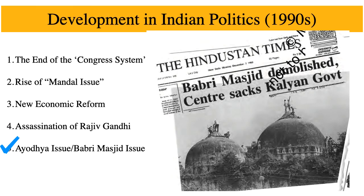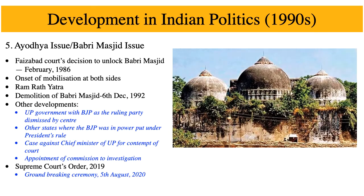Finally, we have the Ayodhya or Babri Masjid issue. The Babri Masjid at Ayodhya was a 16th-century mosque. However, some Hindus believed it was built after demolishing a temple of Lord Ram, believed to be his birthplace — the Ram Janmabhoomi. The whole issue revolved around control of the site. In 1949, some Hindu activists placed idols of Ram in the mosque, which eventually led to the mosque being locked.